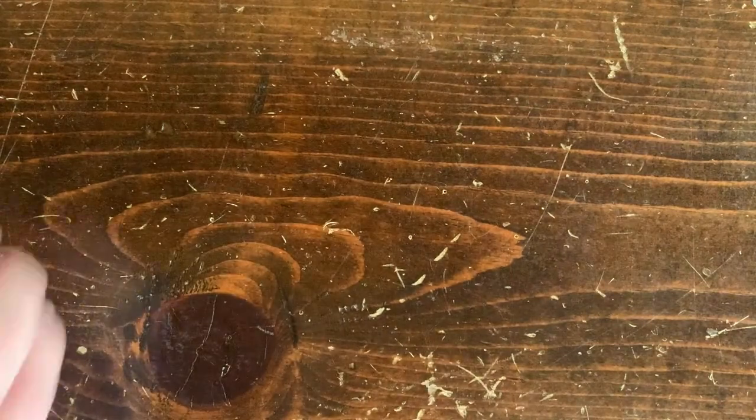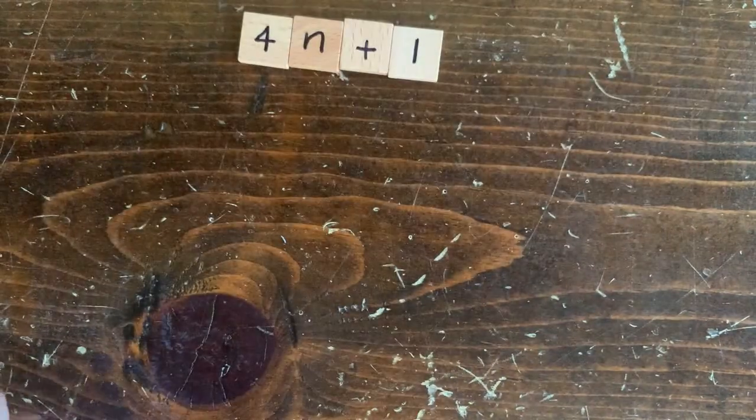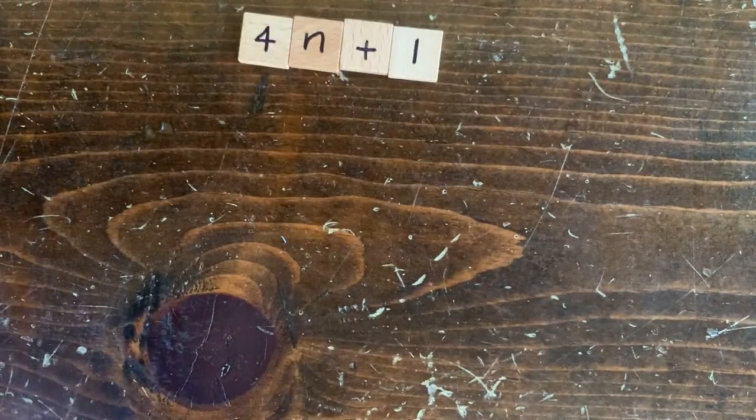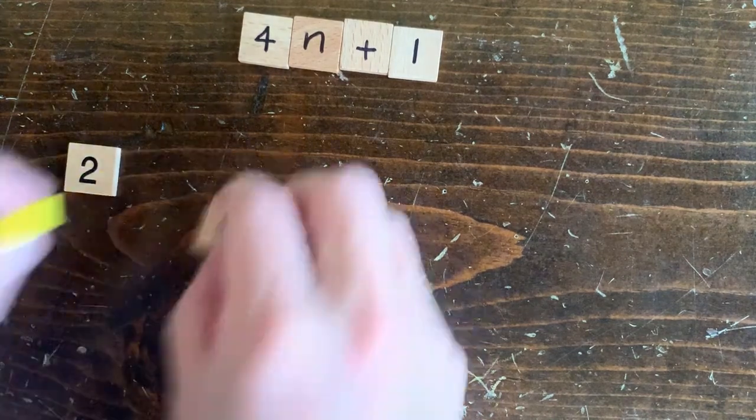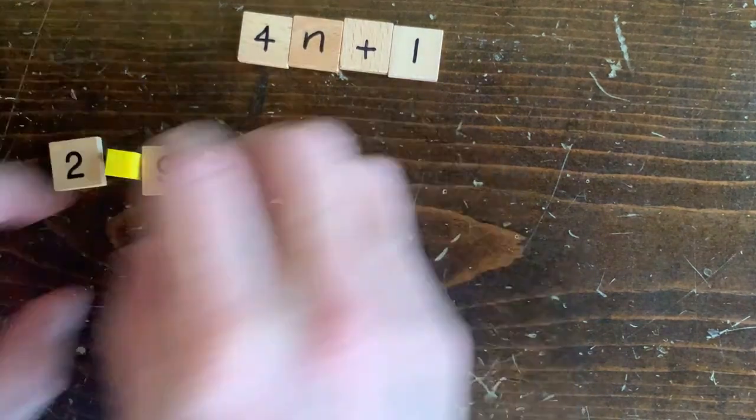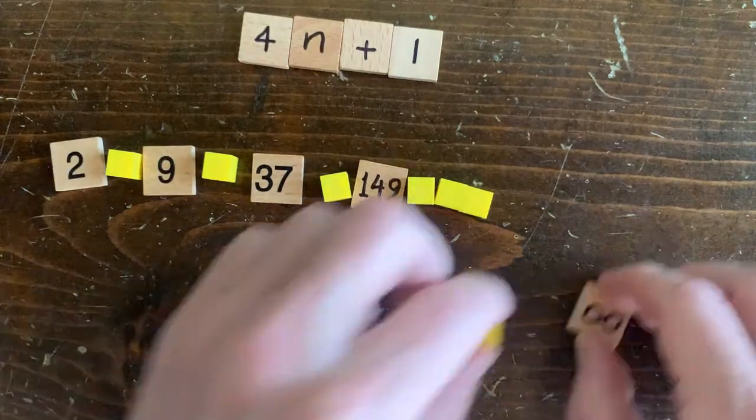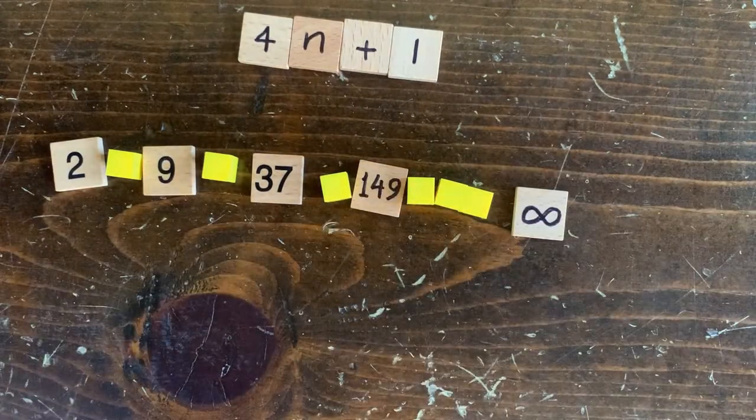So, first thing, did we skip 4? What about the 4n plus 1 problem? That one's not too interesting. No matter what n is, the next number is odd, so it's just going to be one odd number after another. And since odd numbers always go up, almost every number is just going to spin off into infinity.